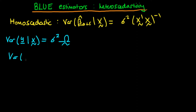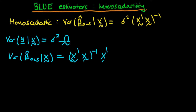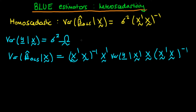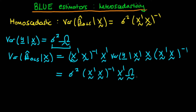Remember that we derived in the last video, before substituting in sigma squared times the identity matrix I, that the variance of beta hat OLS given x is equal to x prime x to the power minus one times x prime times the variance of y given x times x times x prime x to the power minus one. Now if we substitute in our variance form sigma squared times omega, taking the scalar sigma squared out front, this becomes sigma squared times x prime x to the power minus one times x prime times omega times x times x prime x to the power minus one.